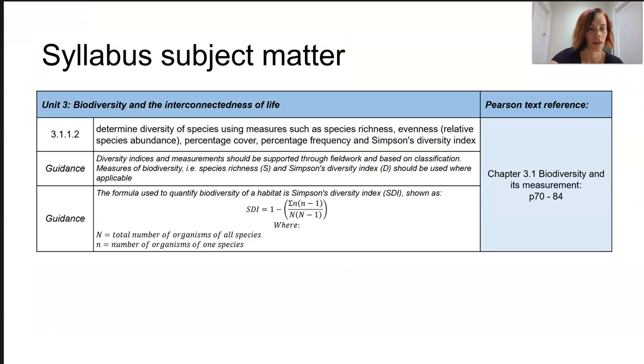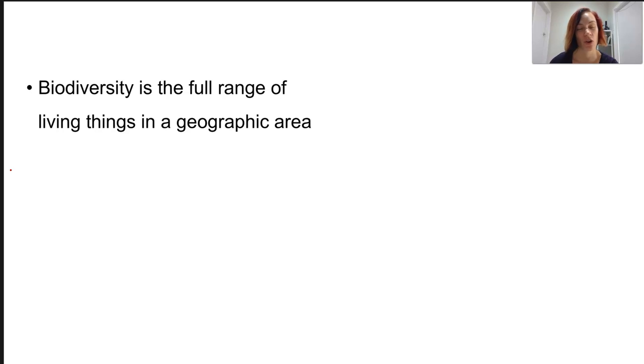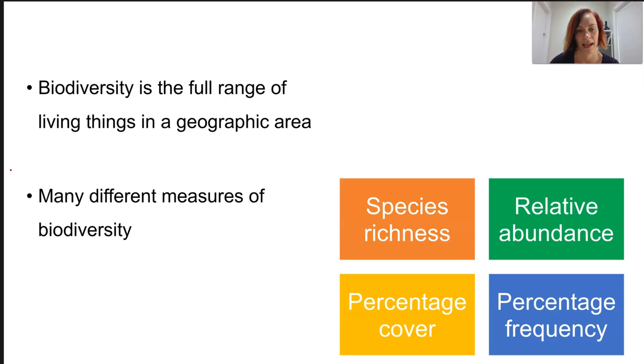We're talking about measuring diversity here. We know that diversity is the full range of living things in a geographic area, and in order to quantify how diverse an ecosystem is, ecologists need a scale or some measure to work with. Since there are so many different factors at play that can diversify a community, we have to use many different measures. The four we're going to talk about today are species richness, relative abundance, percentage cover, and percentage frequency, and we'll also talk briefly about Simpson's diversity index.